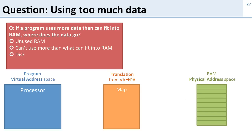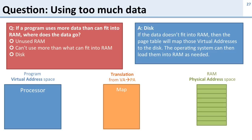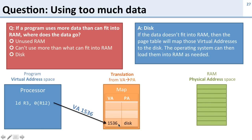Here's another question: if a program uses more data than can fit into RAM, where does the data go? It's going to go to disk. If it doesn't fit into memory, we use virtual memory to map it to disk. So this load goes into our table, and if we didn't have enough space in physical memory for this virtual address, the translation table — the map — will tell us that it's on disk. So we can put the data on disk if it doesn't fit into memory.